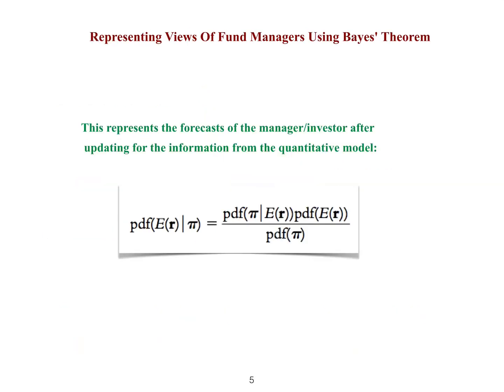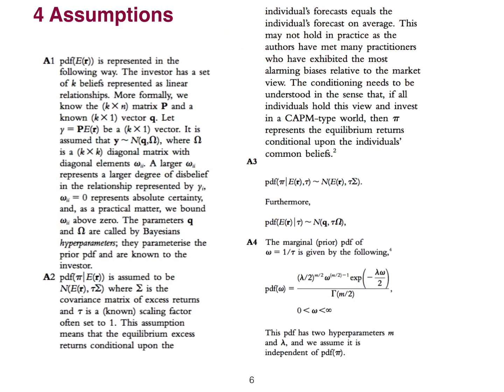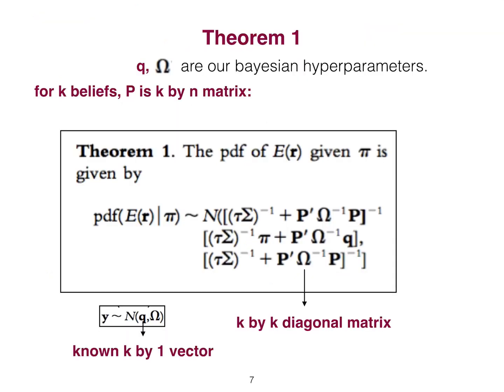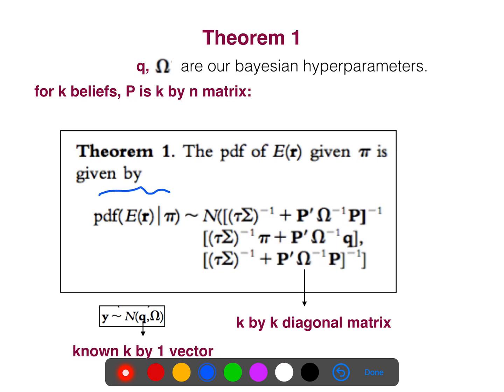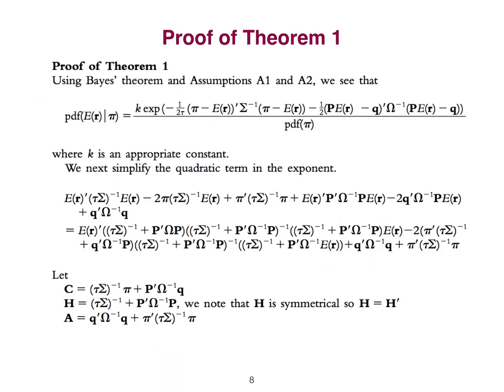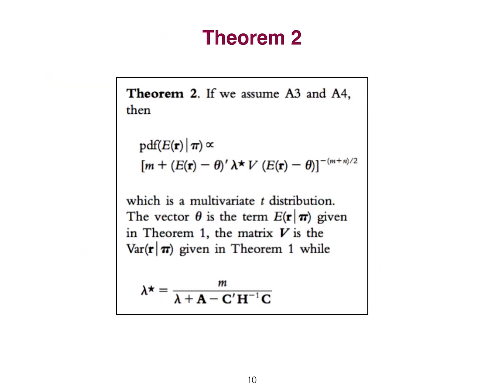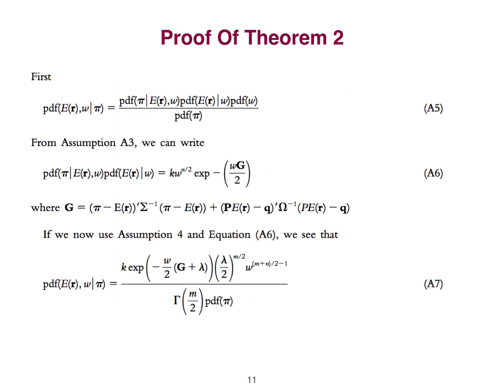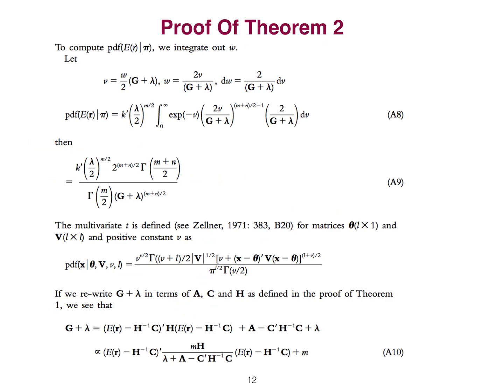This represents the forecast of manager or investor after updating for the information from the quantitative model. So, they used four assumptions for theorem one. For example, this is the posterior probability density function. And it has a mean and this one is the variance. So, it's a normal distribution. They proved this, and this is the proof. It's very simple, just multiplication. And they showed that they can show this posterior probability density function in another format. We are not going to talk about it. And so, this is the proof in 2000, a better proof.